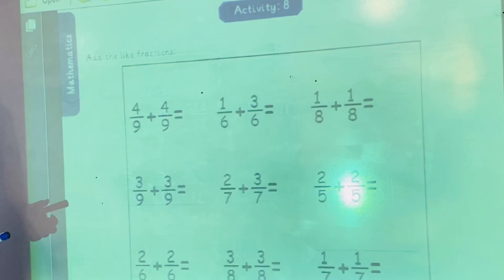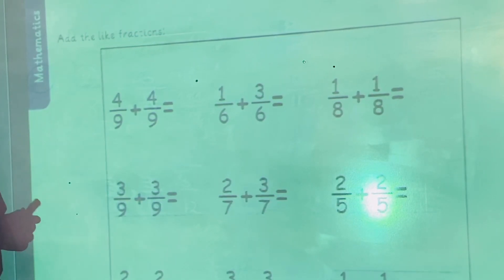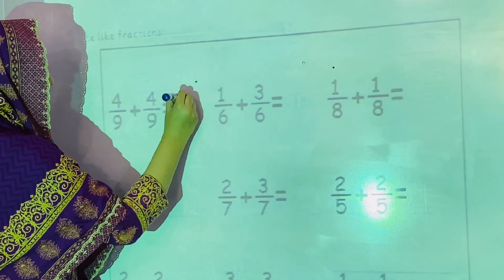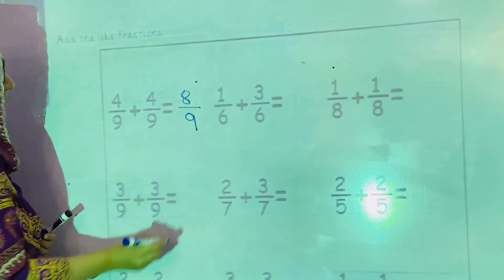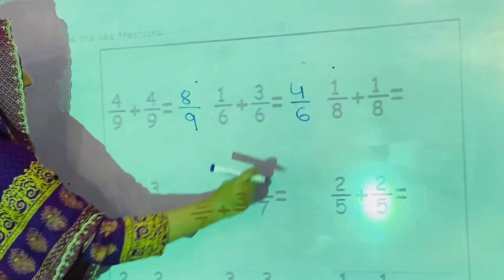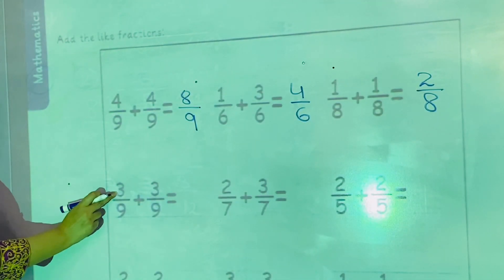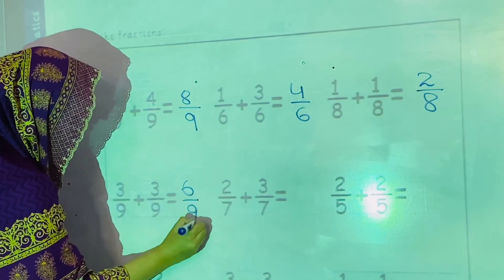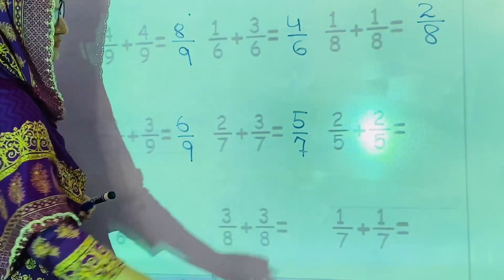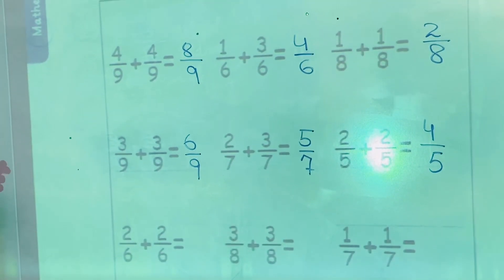Now we are going to start activity number 8: add the like fractions. As we did in the previous activity, this is the same — the denominator will be written as it is and the numerators will be added. 4 plus 4 is 8, and 9 stays as it is. 1 plus 3 is 4, so the answer is 4 by 6. 1 plus 1 is 2, denominator stays. 3 plus 3 is 6, giving 6 by 9. 2 plus 3 is 5, giving 5 by 7. 2 plus 2 is 4, denominator as it is. In this way you will complete this activity.